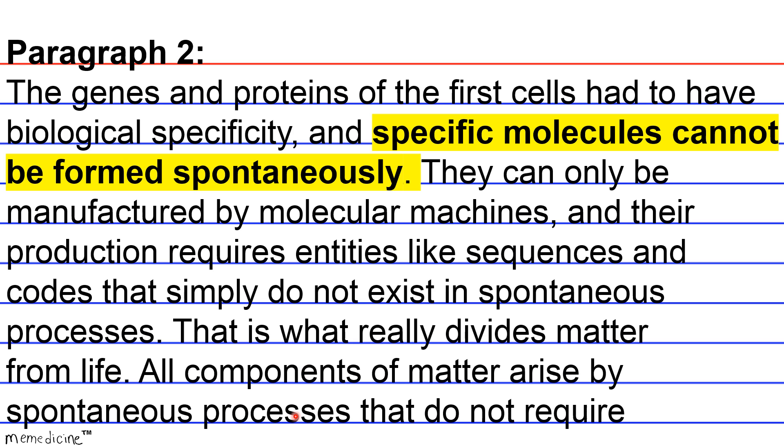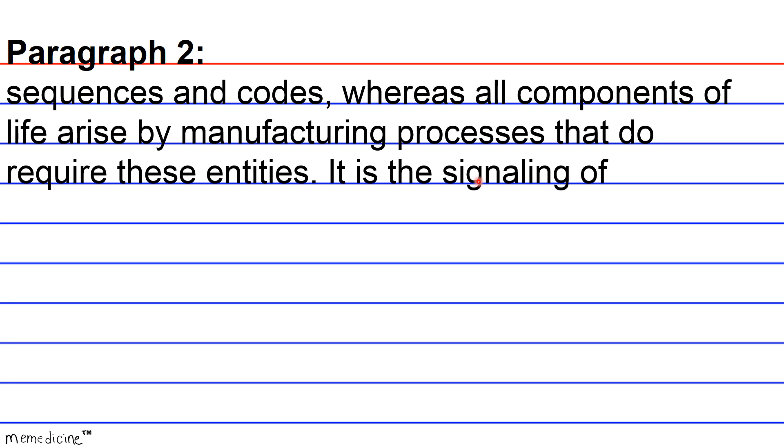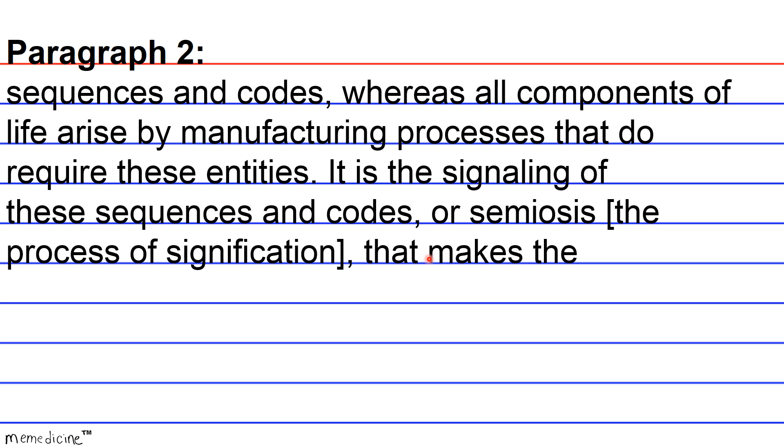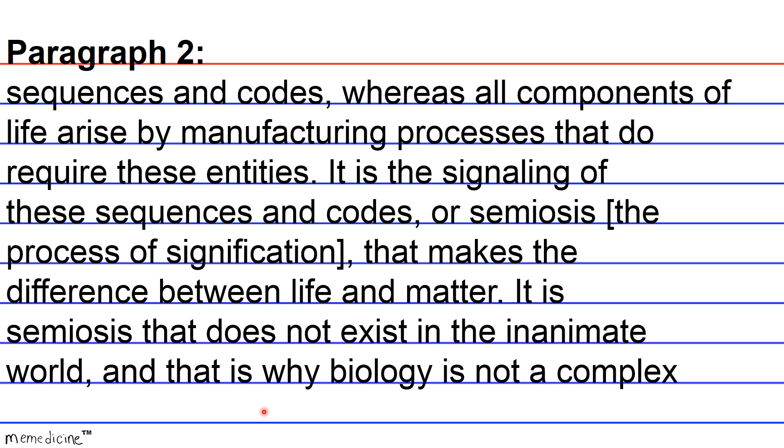All components of matter arise by spontaneous processes that do not require sequences and codes, whereas all components of life arise by manufacturing processes that do require these entities. It is the signaling of these sequences and codes, or semiosis. Semiosis means the process of signification that makes the difference between life and matter. It is semiosis that does not exist in the inanimate world, and that is why biology is not a complex form of chemistry.